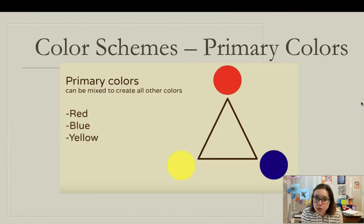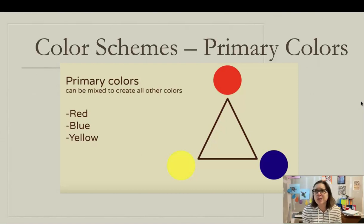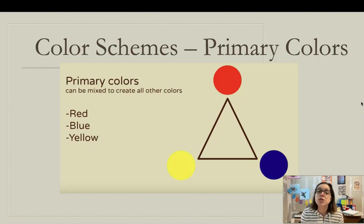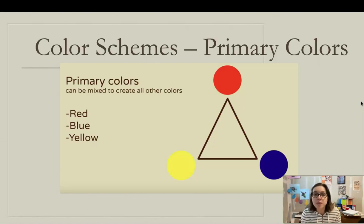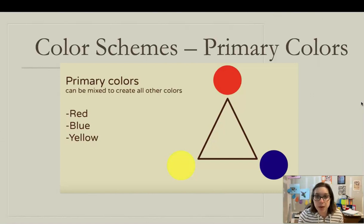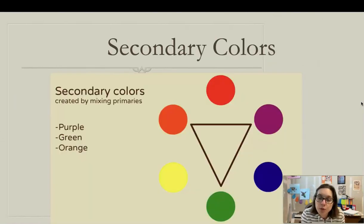The first color scheme is the primary colors — you may have learned this back in elementary or middle school. These are three colors that we mix to create all the other colors. You cannot make these colors by mixing other colors. The primary colors are red, yellow, and blue.